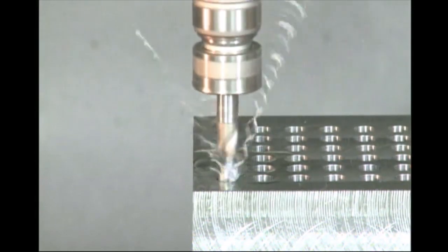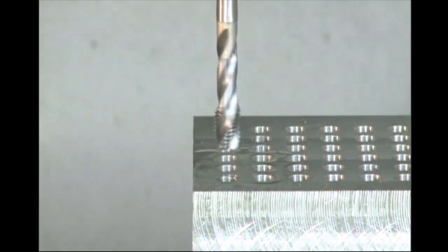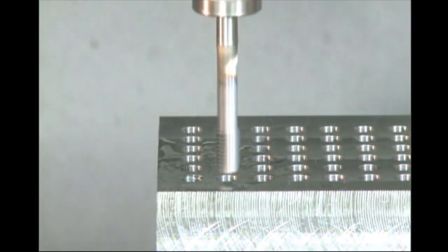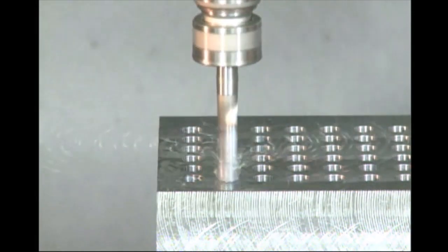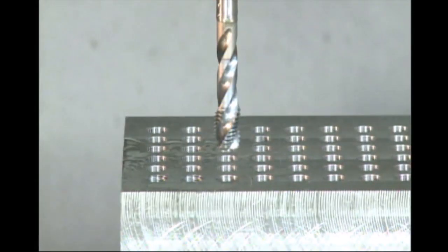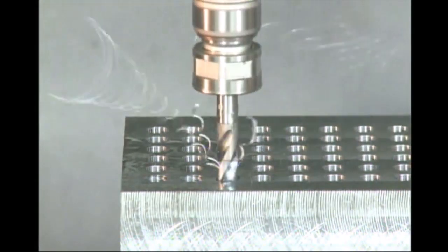The strength of a threaded hole is defined by the thread engagement, or in other words, how much of the bolt or screw is in contact with the threaded hole. This is usually given as a percentage of full engagement, which is set as 100%.